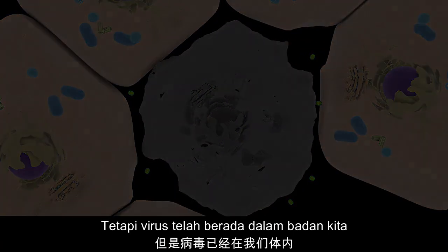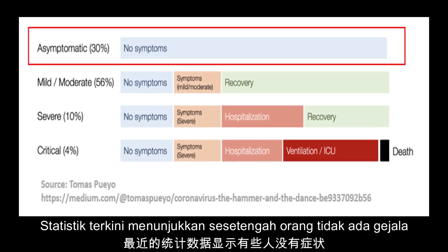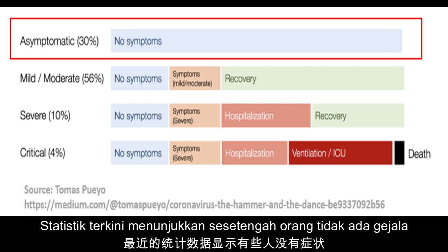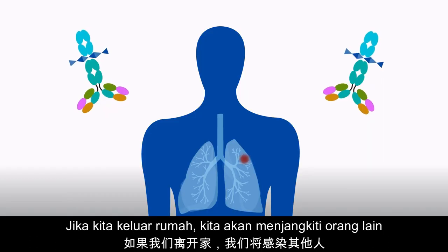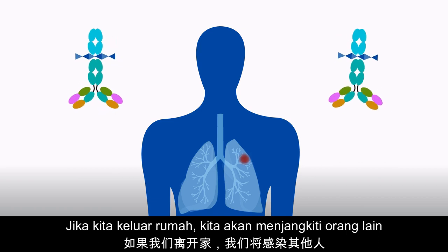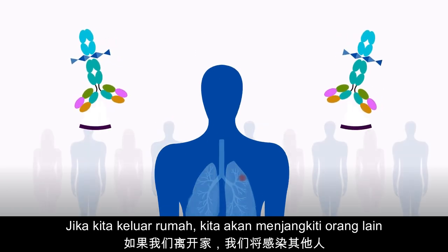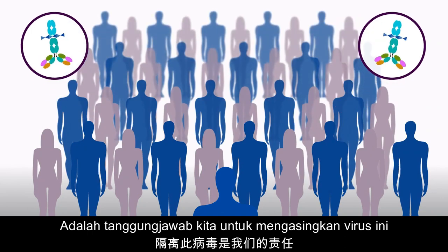It is already in our body. Current statistics also show that there are indeed people who had COVID-19 but did not show any symptoms — which is 30%, quite a significant number — while 56% show mild to moderate symptoms. If we continue to go out, we are going to infect everyone we get in contact with. It is our responsibility to contain the spread of the virus.